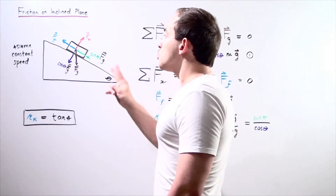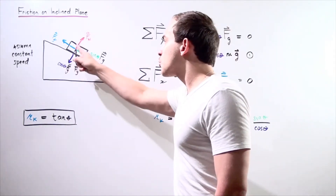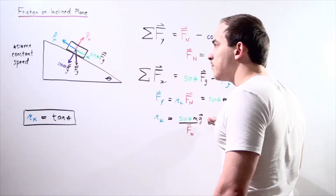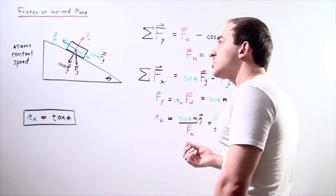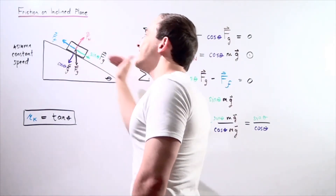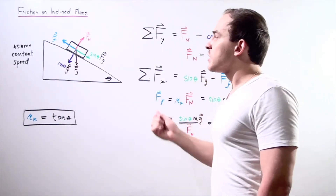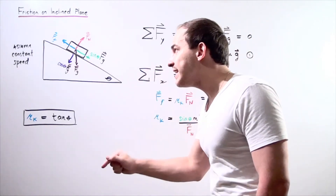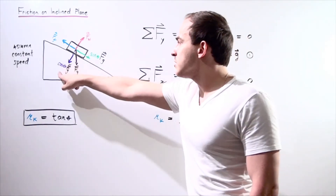There are also two component forces that come from the force of gravity. One component force runs along the x-axis pointing in the positive direction, and that creates the force of friction which points in the opposite direction — the negative direction — along the x-axis. There is also a component force that acts in the negative direction of the y-axis.